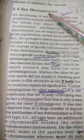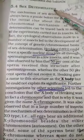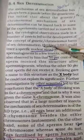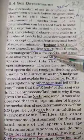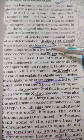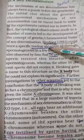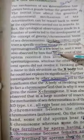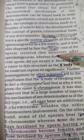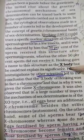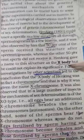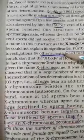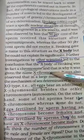As we had started the process of sex determination in the previous video, Henking observed during spermatogenesis in insects that one nuclear structure behaved distinctly. He observed that 50% of the sperm received this structure and 50% did not, so he named that body the X body.